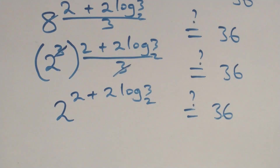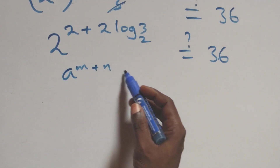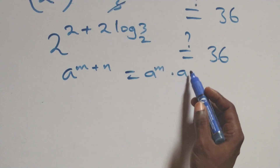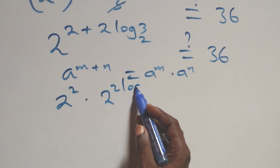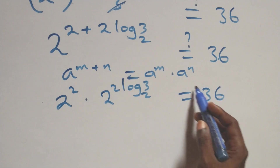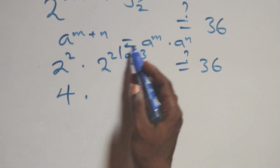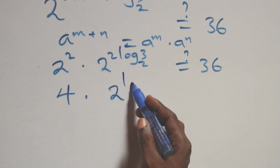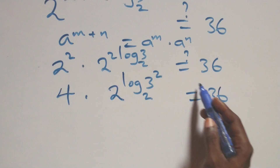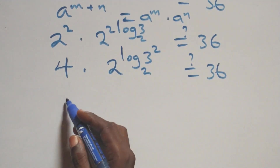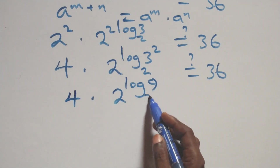Applying the indices rule — a raised to power n plus m equals a raised to power n times a raised to power m — we get 2 squared times 2 raised to power 2 log 3 base 2 equals 36. That is, 4 times 2 raised to power log(3 squared) base 2, which equals 4 times 2 raised to power log 9 base 2, equals 36.